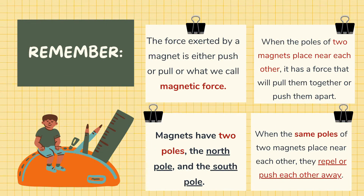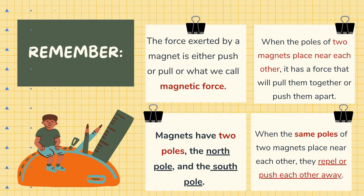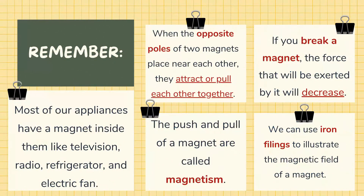Now class, here are some facts to remember. The force exerted by a magnet is either push or pull, or what we call magnetic force. When the poles of two magnets are placed near each other, there is a force that will pull them together or push them apart. Magnets have two poles — the north pole and the south pole. When the same poles of two magnets are placed near each other, they repel or push each other away. When the opposite poles of two magnets are placed near each other, they attract or pull each other together.